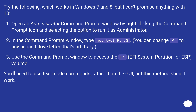Try the following, which works in Windows 7 and 8, but I can't promise anything with 10. Open an administrator command prompt window by right-clicking the command prompt icon and selecting the option to run it as administrator. In the command prompt window, type the diskpart command. You can change the drive letter P to any unused drive letter — that's arbitrary. Use the command prompt window to access the EFI system partition or volume. You'll need to use text-mode commands rather than the GUI, but this method should work.